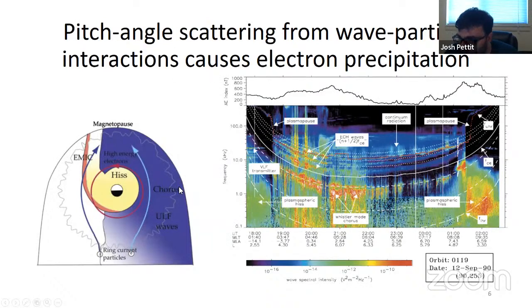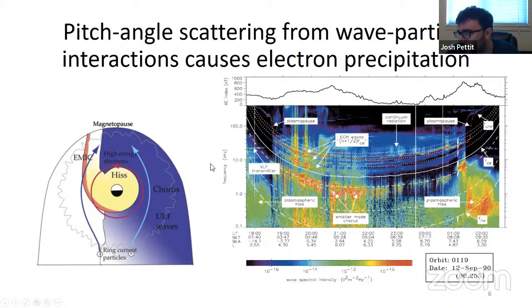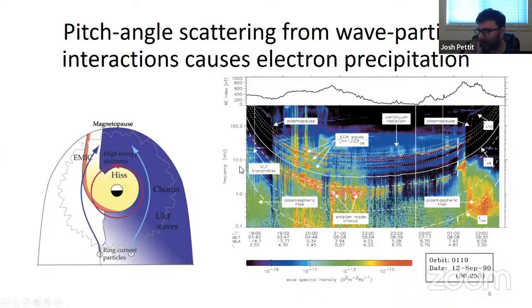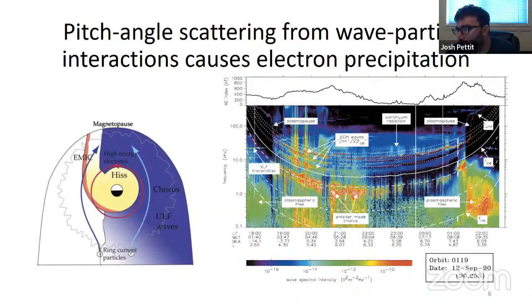In particular, chorus waves, ULF waves, plasmaspheric hiss, EMIC waves. This is from Milan and Thorne, 2007. It's a nice overview of the frequency of all the waves during an AE index period on September 12th in 1990. It mostly summarizes the idea that these waves tend to cause pitch angle scattering, and then this causes these electrons to fall into the atmosphere where chemistry changes and other things can happen.